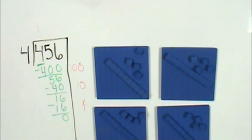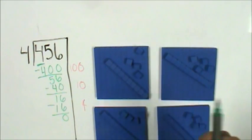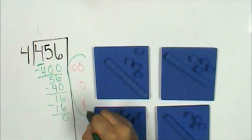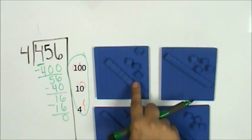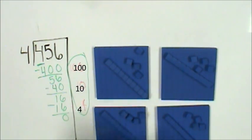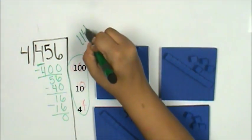Each group has 4 ones. And to find my quotient, I will add 100, 10, and 4 and that's 114.